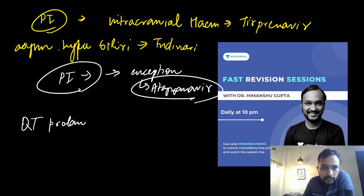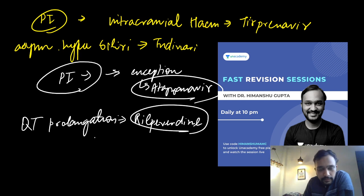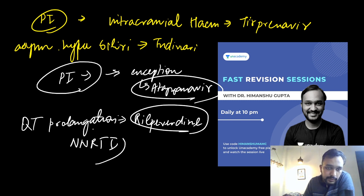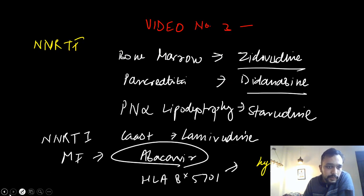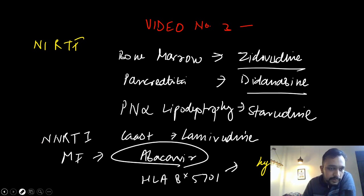And lastly, QT prolongation is associated with rilpivirine, which is an NNRTI — a non-nucleoside reverse transcriptase inhibitor. So these were your key antiretroviral drug side effects to remember.